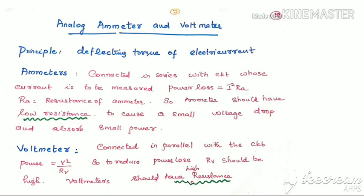The principle used by analog ammeter and voltmeter is the deflecting property of electric current — a current-carrying coil placed in a magnetic field produces a torque. Ammeters are connected in series; power loss is I²·RA, so ammeter should have low resistance. Voltmeters are connected in parallel; power loss is V²/RV, so to reduce power loss RV should be high — ideally infinite, but in practice as high as possible.